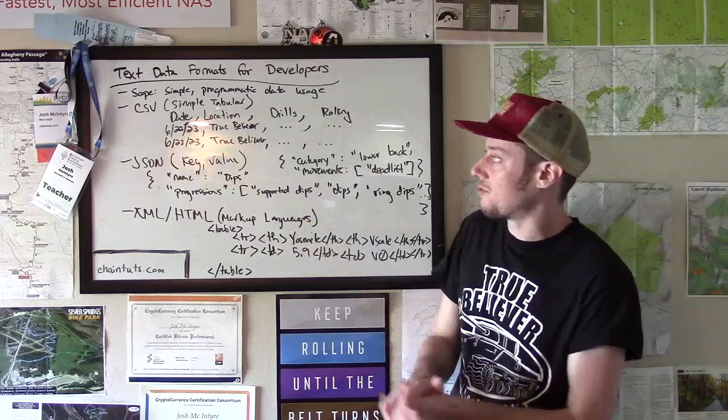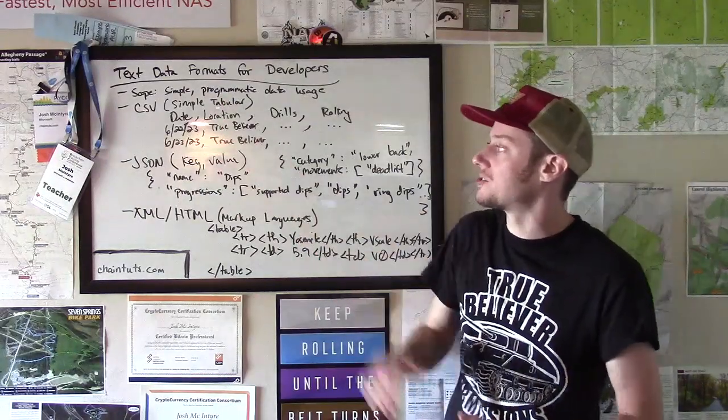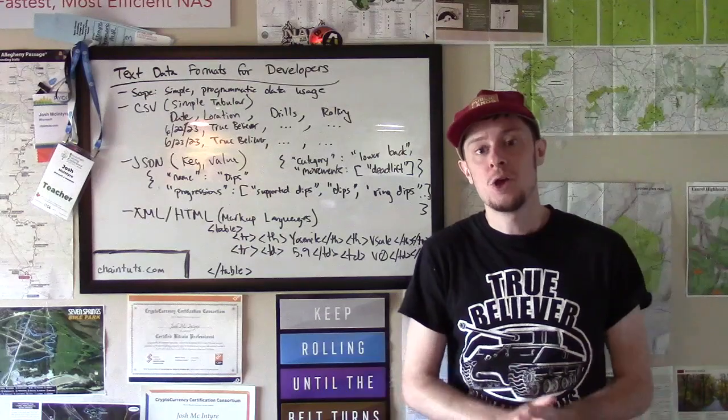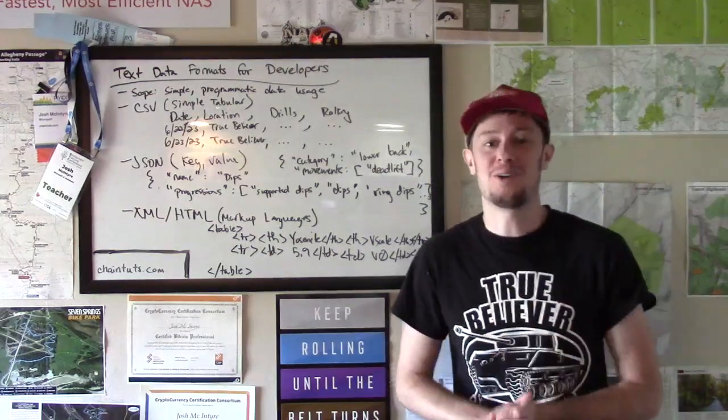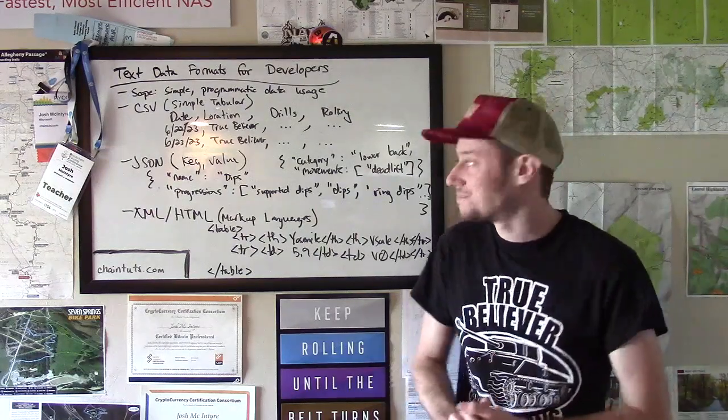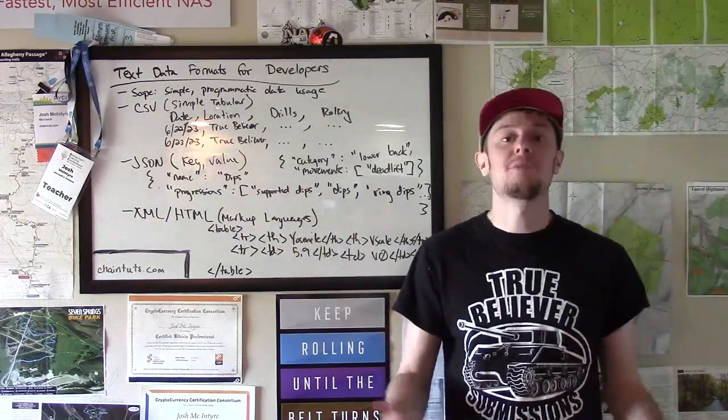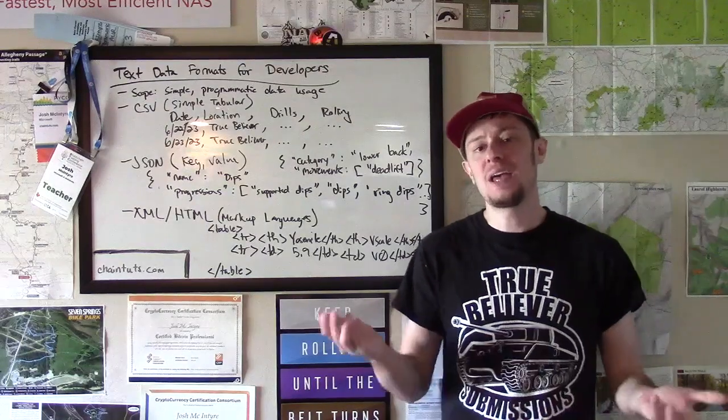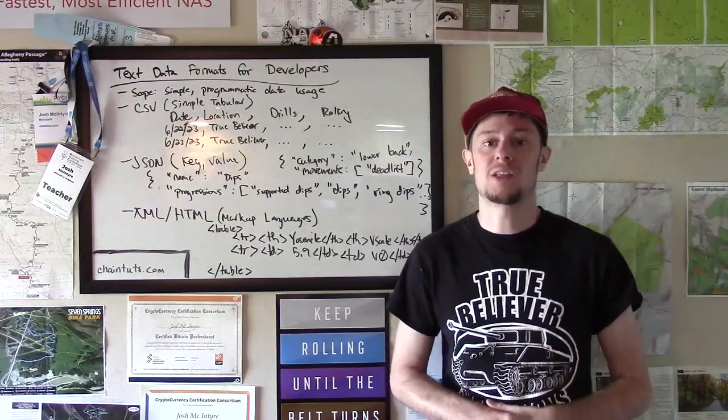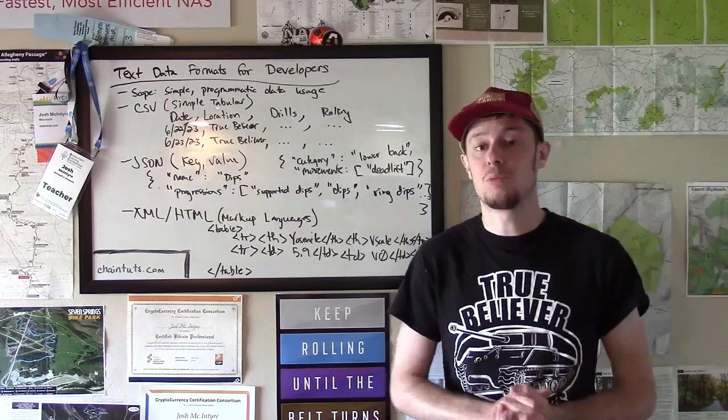And for this information each column is going to be separated by what we call a delimiter. So in a comma separated value each column is separated by a comma. You can also have tab separated value files or really any logical delimiter as long as your software is able to parse that out.